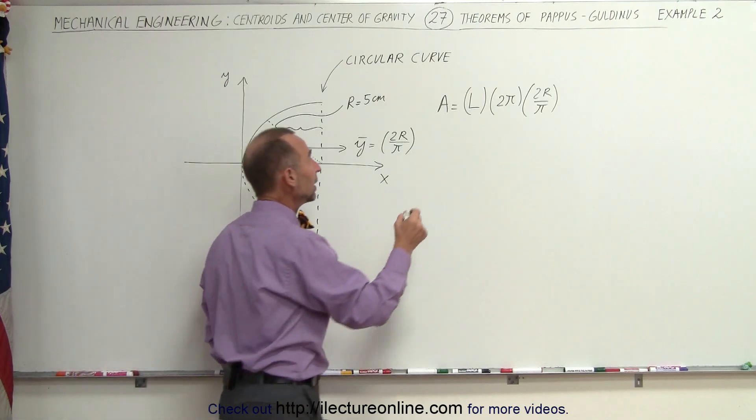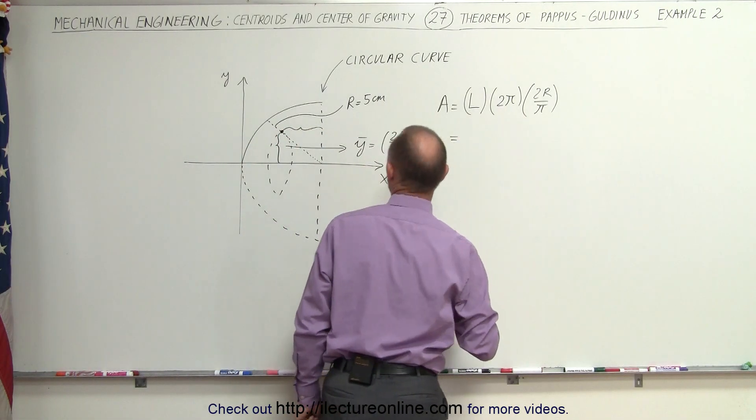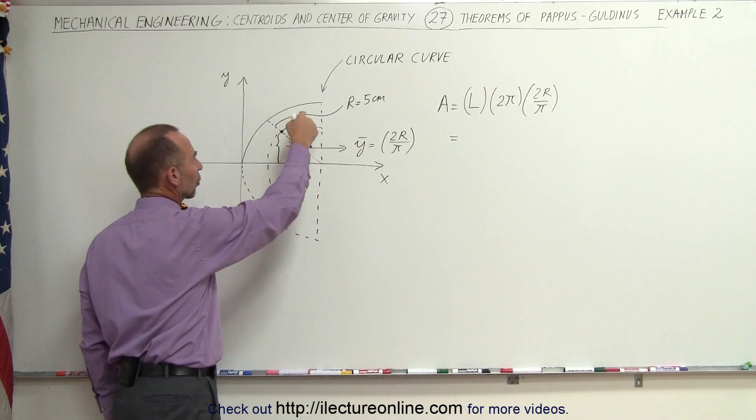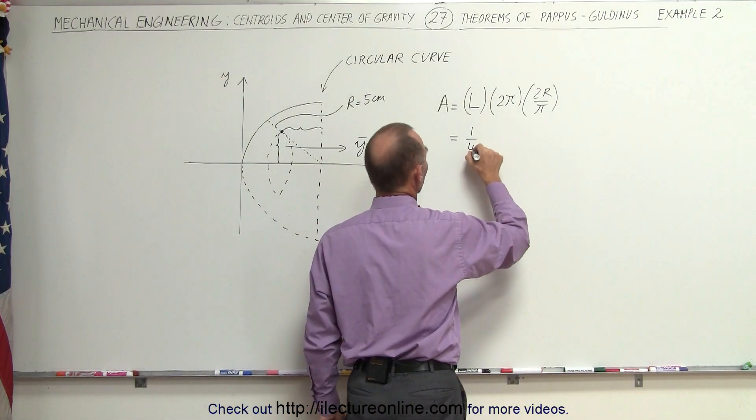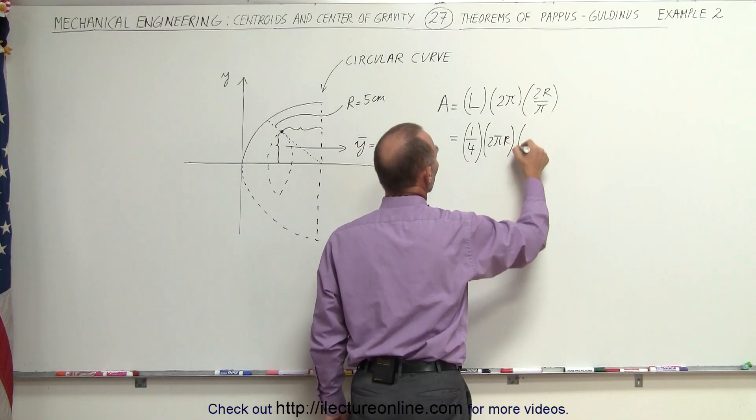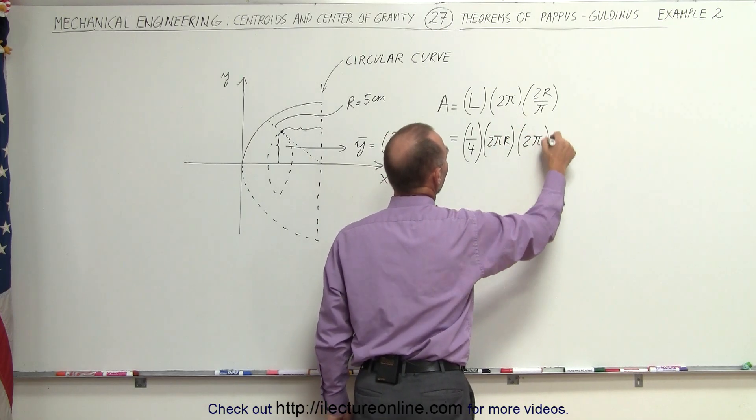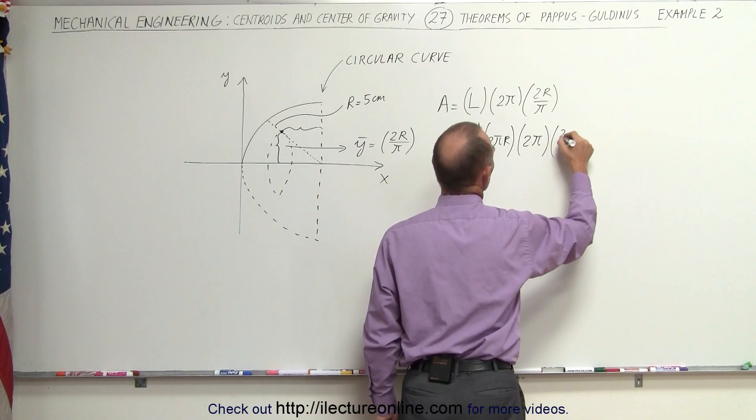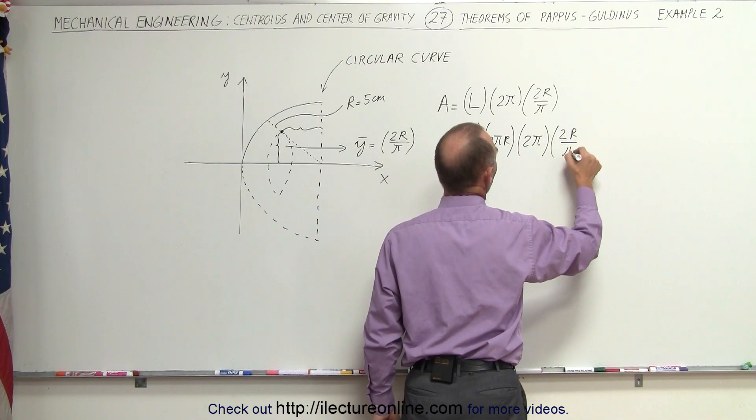Now, let's plug in the values and see what we get. What is the length of a quarter circle? Well, the length of a quarter circle is one quarter the length of a full circle, which is 2 pi times the radius. We multiply that times 2 pi, and then we multiply that times 2 times the radius divided by pi.